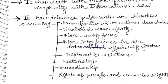These concerns include: land frontiers, maritime boundaries, territorial sovereignty, non-use of force, non-interference in the internal affairs of states, diplomatic relations, nationality, guardianship, rights of passage, and economic rights, among many others.